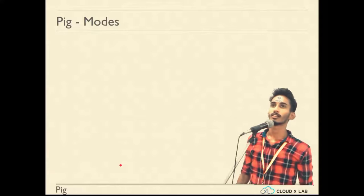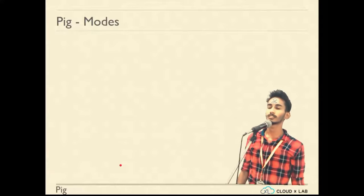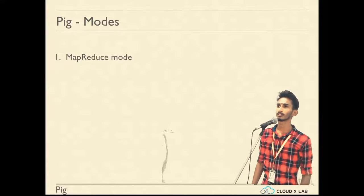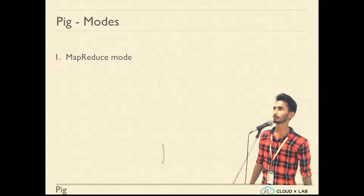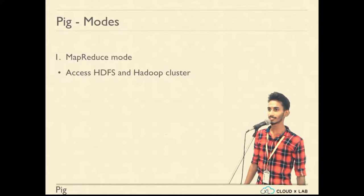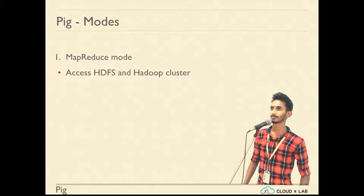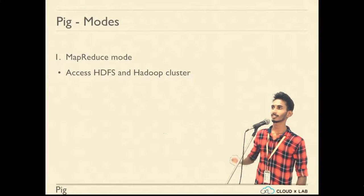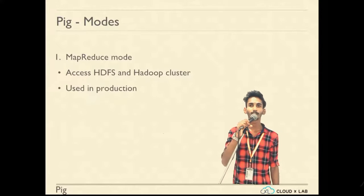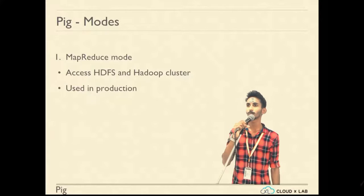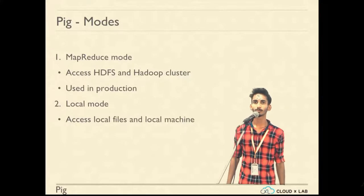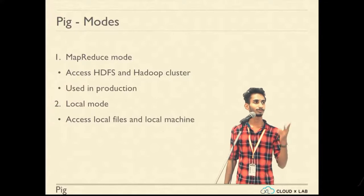Pig can be in two modes. The first is MapReduce mode, which accesses HDFS and a cluster. It is used for production and processing encrypted data.